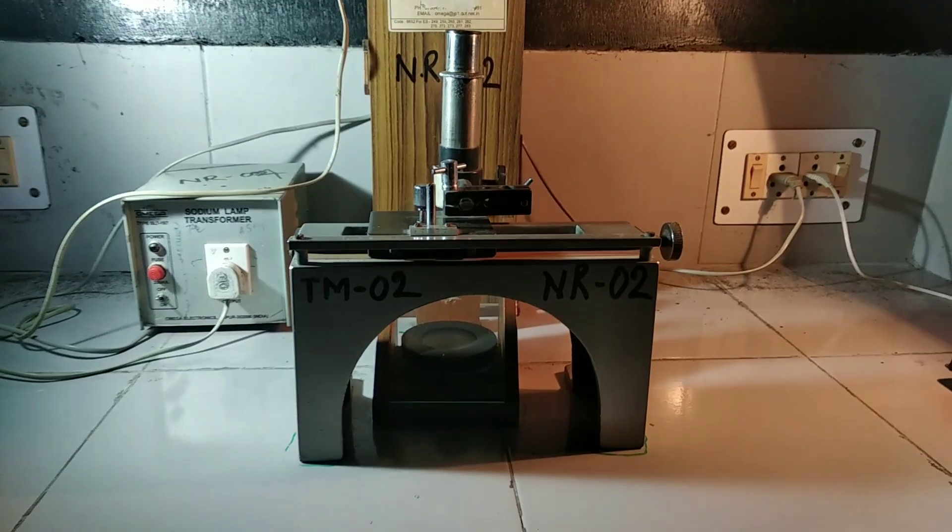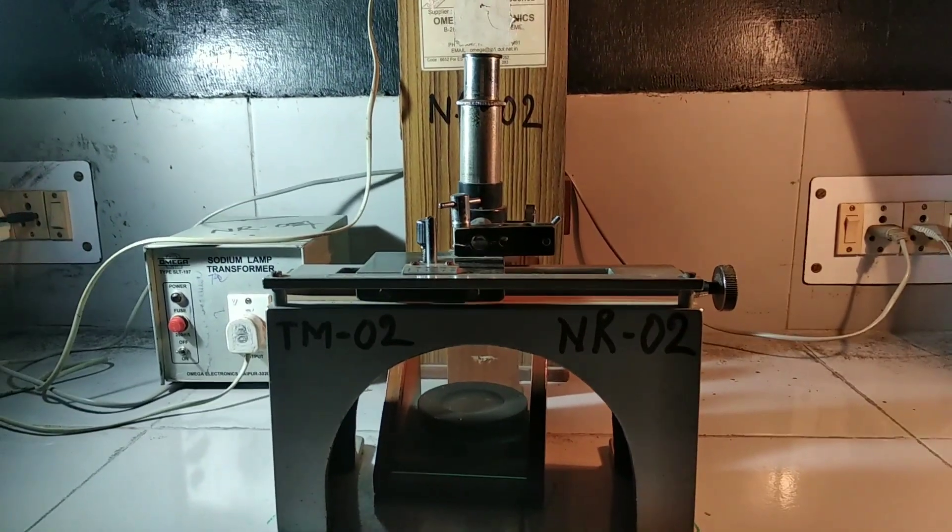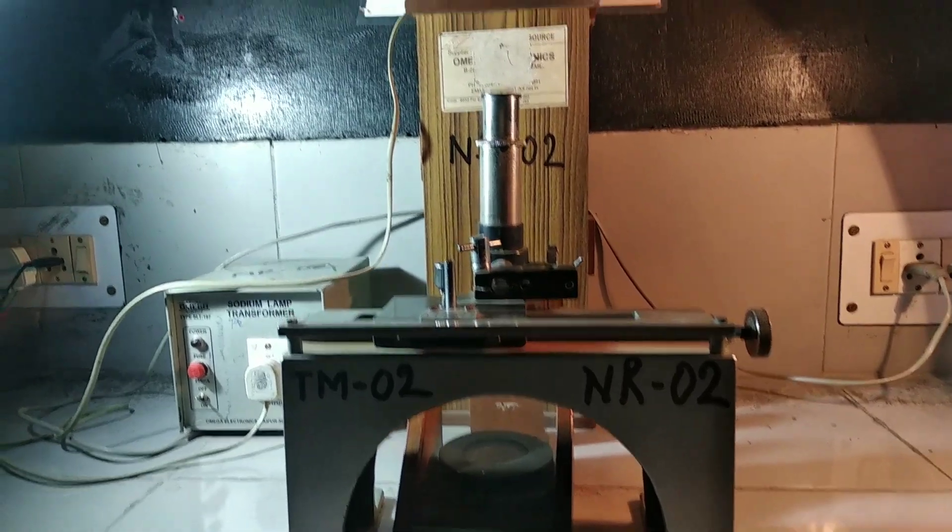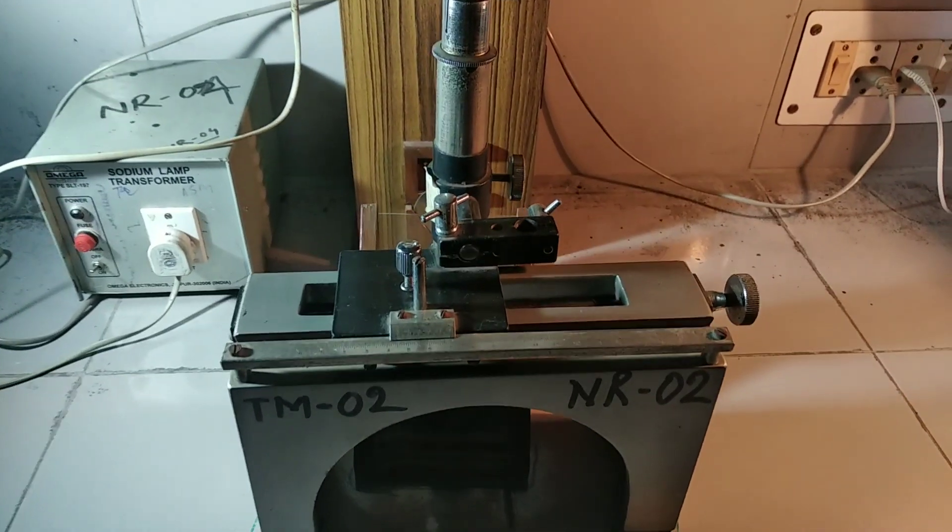Hello students, this is our fourth week experiment. The experiment name is Determination of wavelength of light using Newton's ring method.